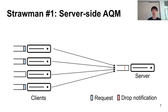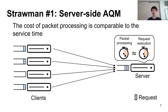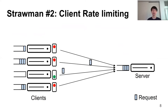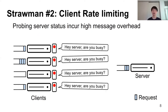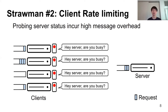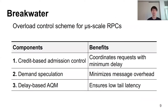One straightforward approach to achieve this is server-side AQM. If the request queue grows large, the server can drop the request and notify the clients. However, with microsecond-scale RPCs, request dropping is expensive because the cost of processing packets and parsing requests is comparable to the request execution time. An alternative straightforward design is client-side rate limiting. Based on the observed server status, clients can adjust their request sending rate in a decentralized way. However, it requires clients to have a fresh view of the server status to react to congestion without delay, leading to additional message overhead. And that overhead increases with a larger number of clients.